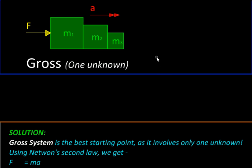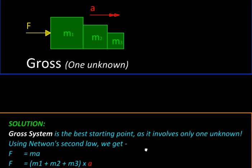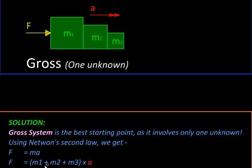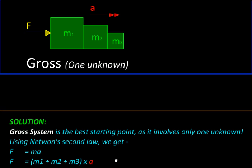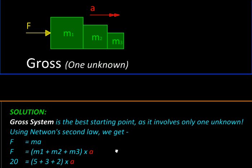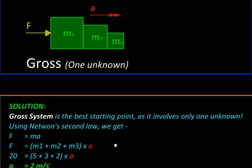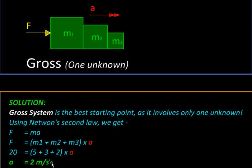So we start with the force analysis of the entire system, this gross system diagram. And apply Newton's second law, F equals MA, where F is the net force, M is the mass of the system, which will be the sum of the three masses, M1 plus M2 plus M3. And then A will be the only unknown. We substitute numerical values and solve to get the system acceleration to be two meters per second square.